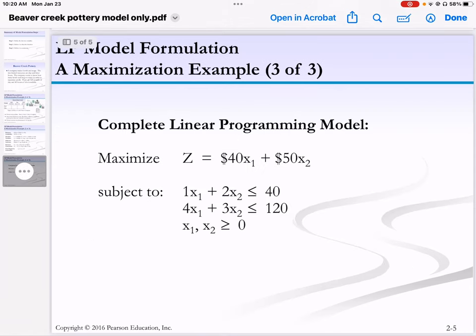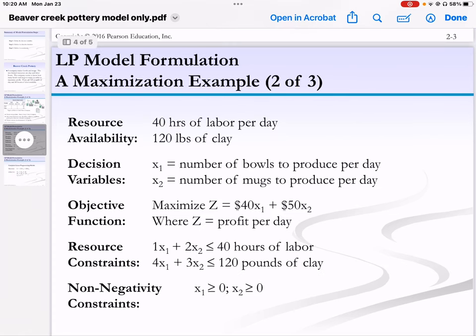So what is our clay constraint? Four times the number of bowls plus three times the number of mugs. And we only have 120 available, so it's less than or equal to 120.